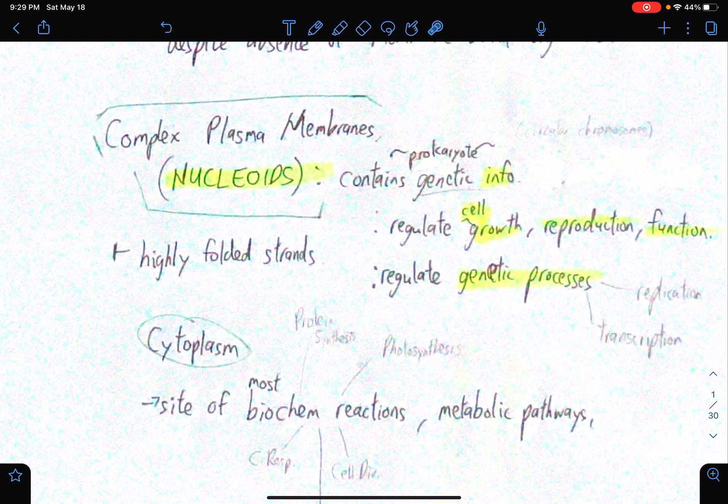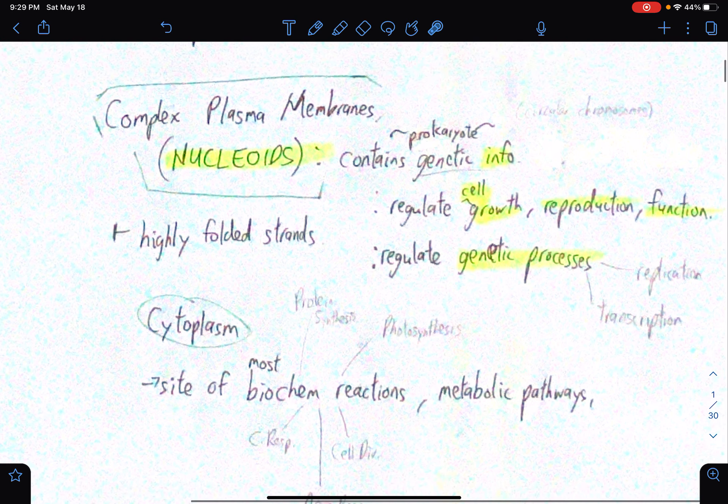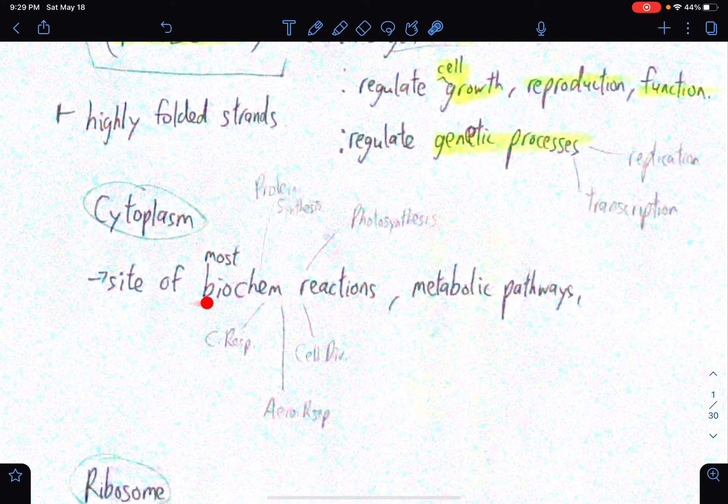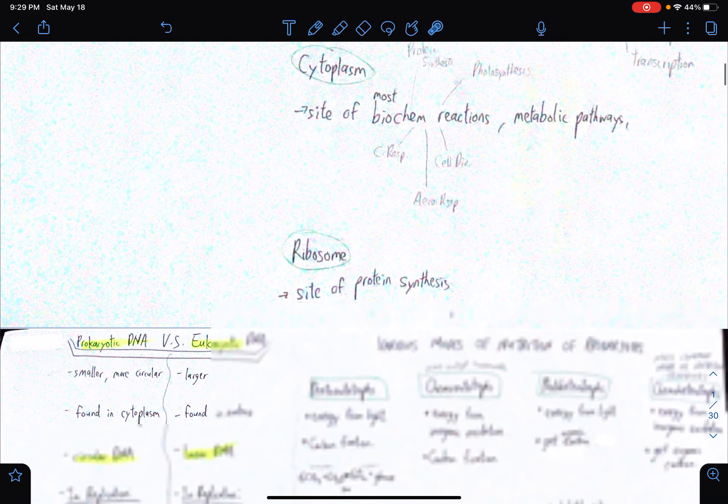So it is composed of highly folded strands and more on the cytoplasm. The cytoplasm is the site of most biochemical reactions, which you usually study during the first quarter, protein synthesis, photosynthesis, cell division, aerobic respiration, cellular respiration, so yeah, you name it, as well as metabolic pathways. How about the ribosome? So basically, the ribosome is the site of protein synthesis.